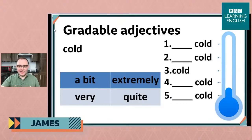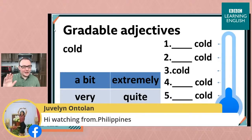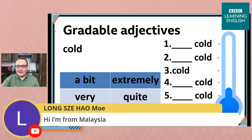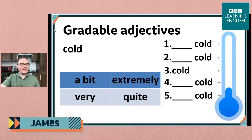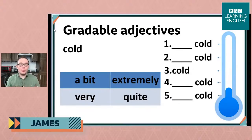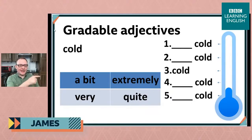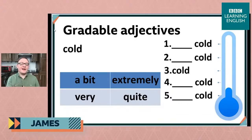We have Juvelin watching from the Philippines, and Long watching from Malaysia. We have a very international audience today! Now, looking at those options: number 1 is going to be the least cold, and number 5 is going to be the most cold. So think about that carefully when placing the modifiers — you want the one meaning very, very cold at number 5, and the one meaning the least cold at number 1.